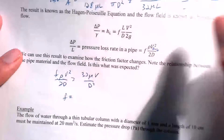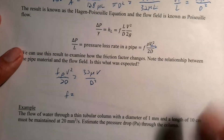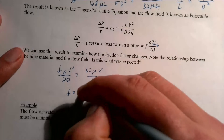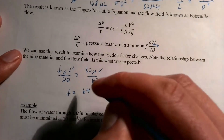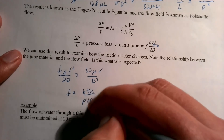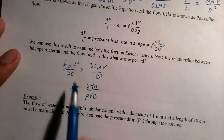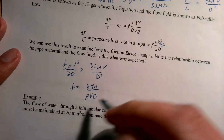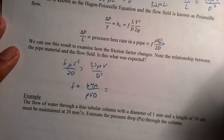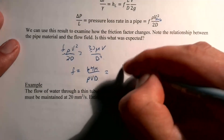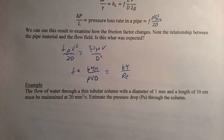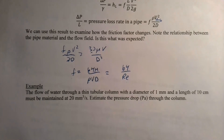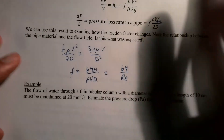Working that out: one V and one D cancel, and we get f = 64μ/(ρVD). The quantity ρVD/μ is exactly the Reynolds number, so this simplifies beautifully to f = 64/Re. After all that work, we have the friction factor as a function of Reynolds number — and that's why the Reynolds number is so important.